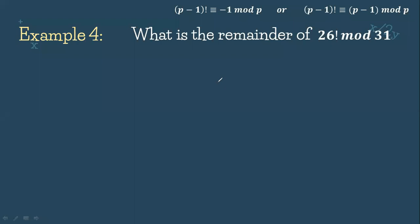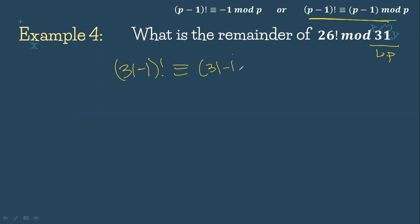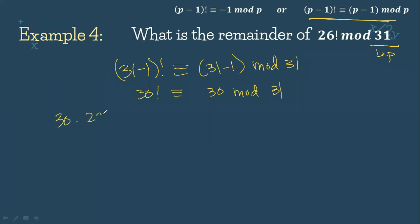For example number 4, what is the remainder of 26 factorial mod 31? So 31 is our P. We will have (31 minus 1) factorial congruent to (31 minus 1) mod 31, which gives 30 factorial congruent to 30 mod 31. Expanding: 30 times 29 times 28 times 27 times 26 factorial is congruent to 30 mod 31.